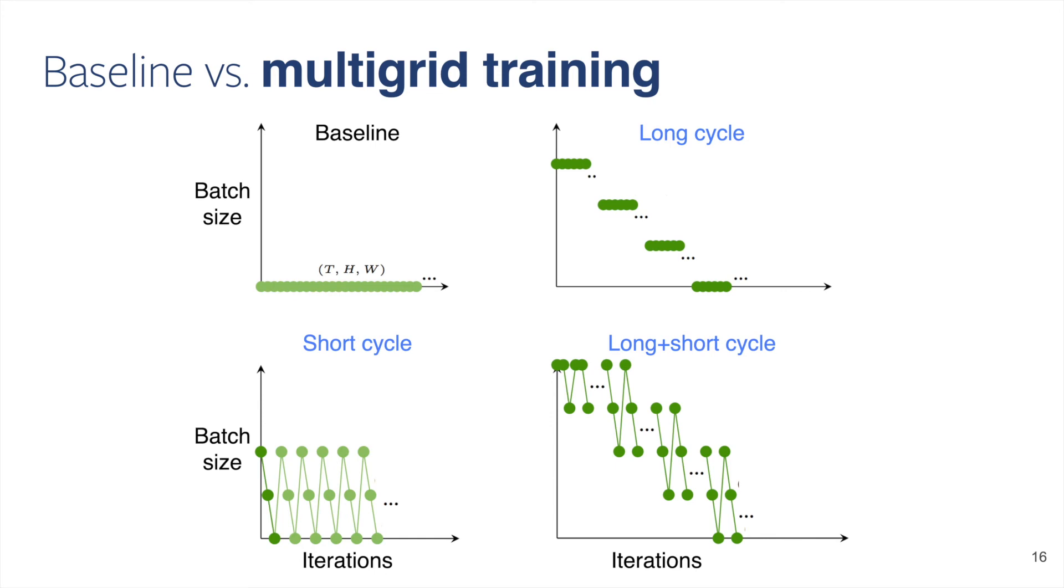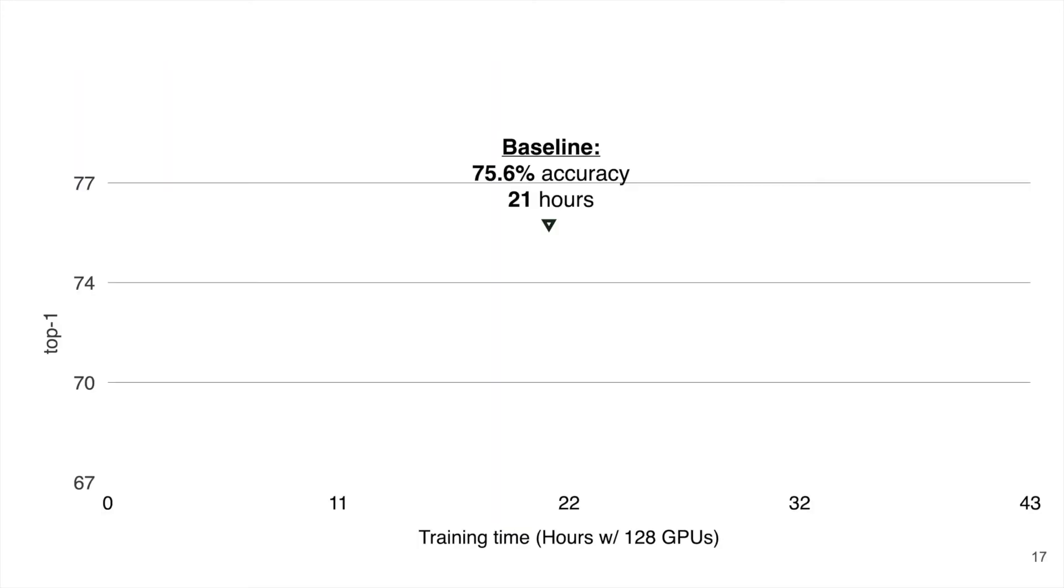Next, we quantitatively evaluate these methods. The point on this figure shows the accuracy and training time of a baseline method, which uses a fixed batch shape throughout training. It converges in about 21 hours. If we train this model for different numbers of epochs, we obtain the following trade-off.